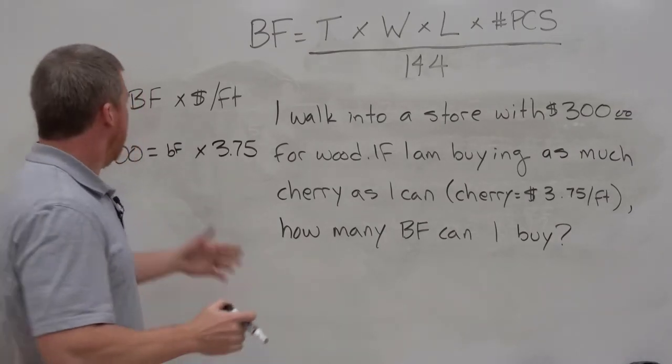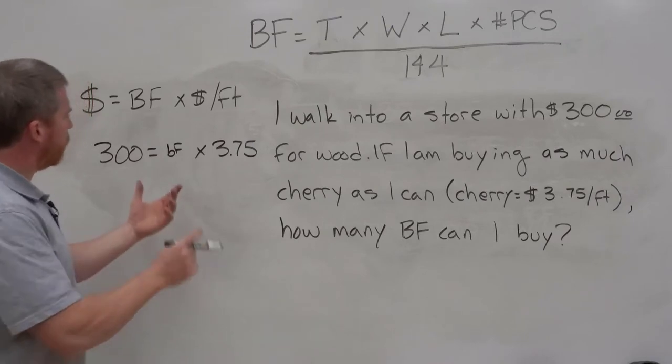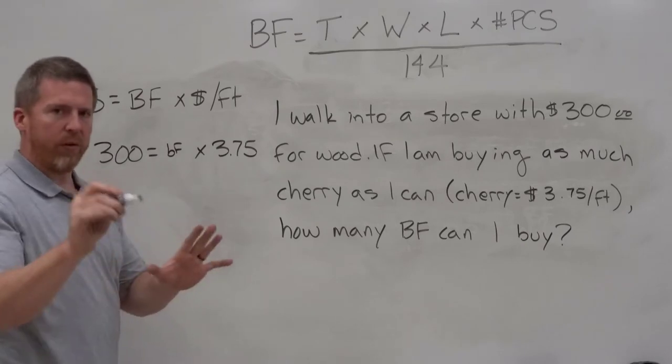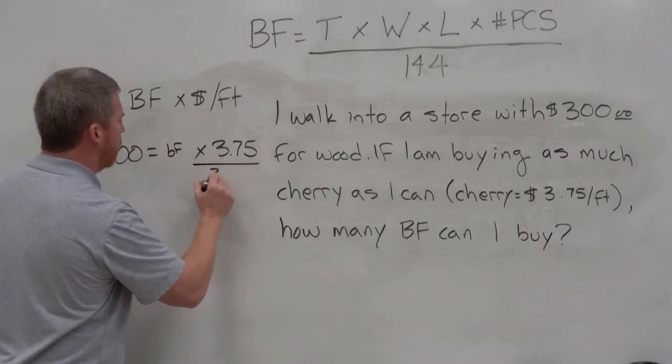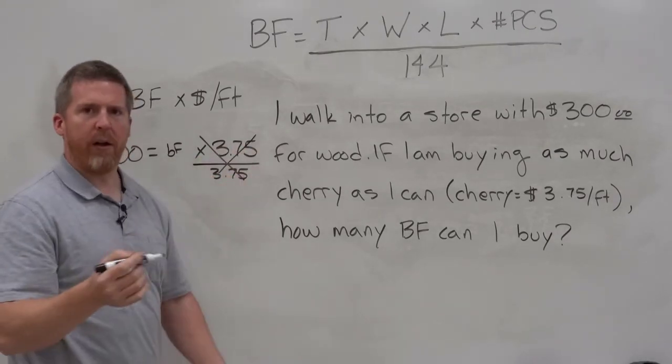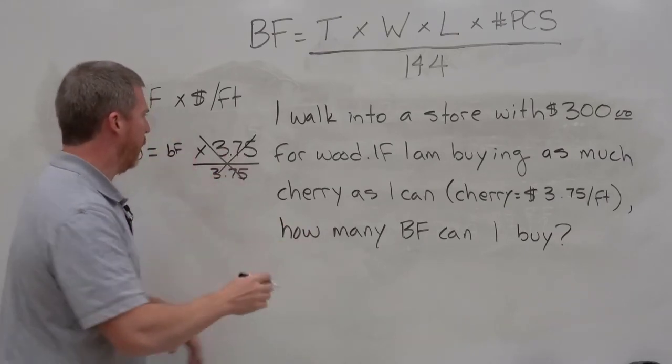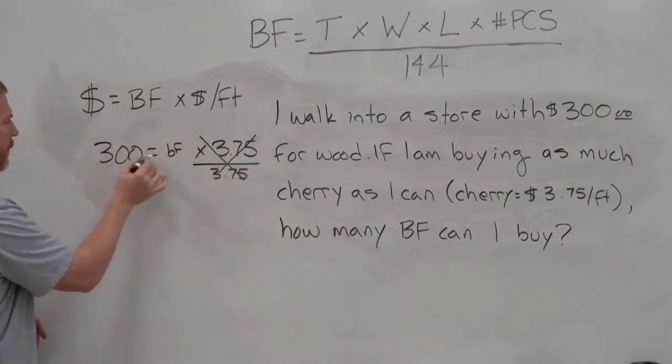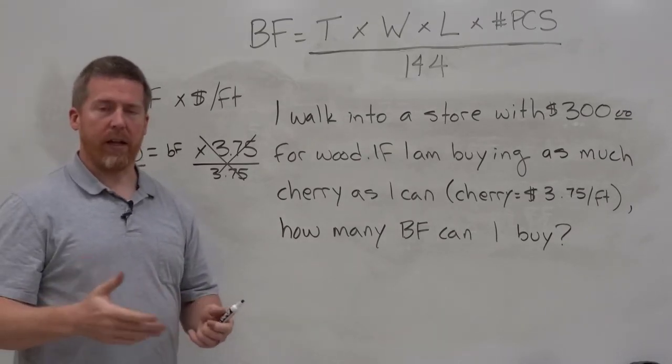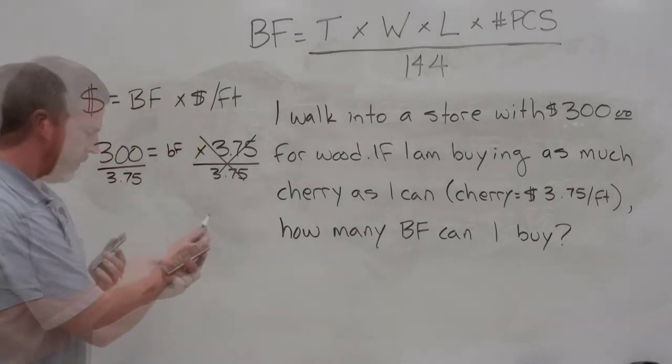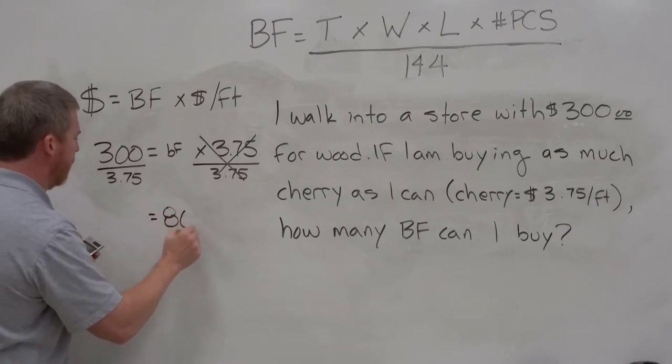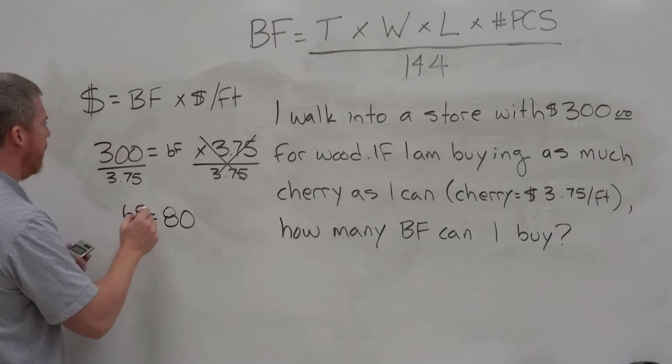So we put that in as 300 is equal to the board feet, which is what we're looking for. That's our variable. We'll just put BF, if you will, times the price per foot, which is written right here as well. 3.75. Now, we have our equation. What do we do? In this case, for all of you algebra experts, we need to get our variable alone. We need to move this to the other side of the equal sign. To do that, we divide this by 3.75. But whatever we do to the right, we have to do to the left of the equal sign. We divide that by 3.75.